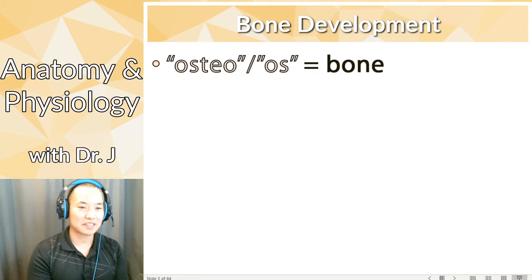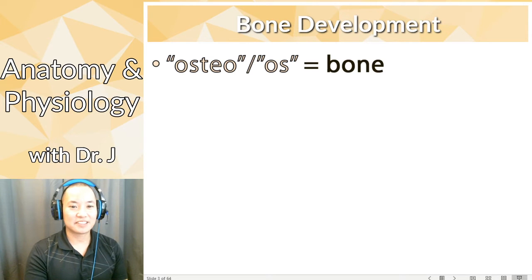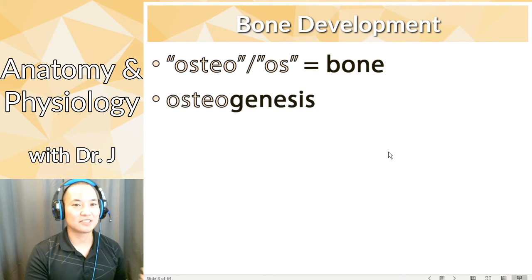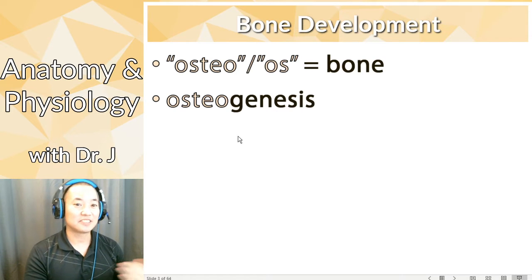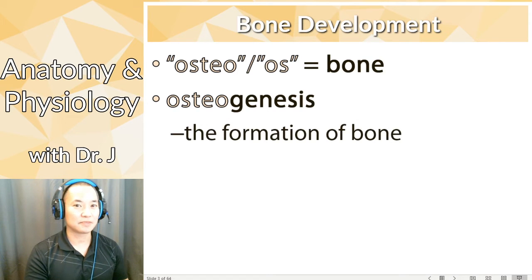All right, so bone development. Remember that root word osteo or os is a Latin term meaning bone. So whenever you see that, think bone. Now osteogenesis — remember that root word gen? That means you're generating something, giving birth to new stuff. So osteogenesis is the generation and formation of new bone.